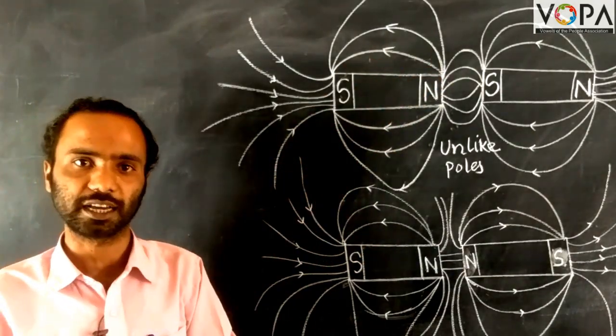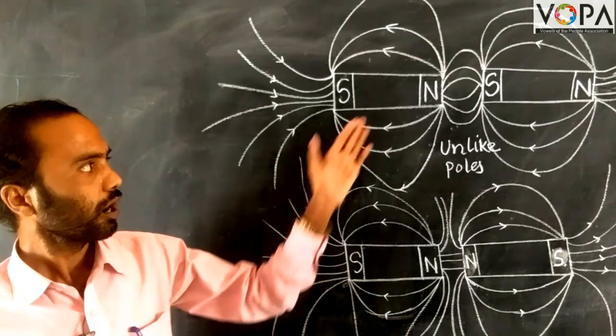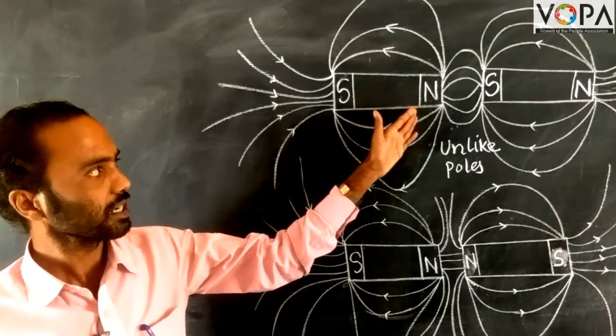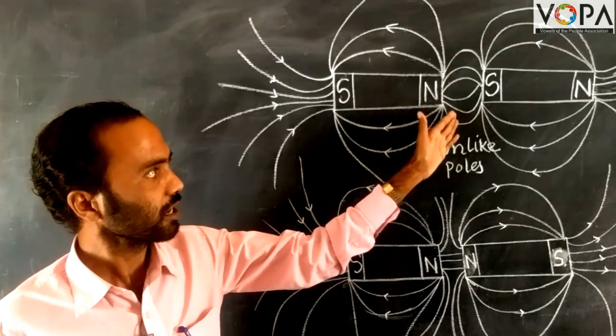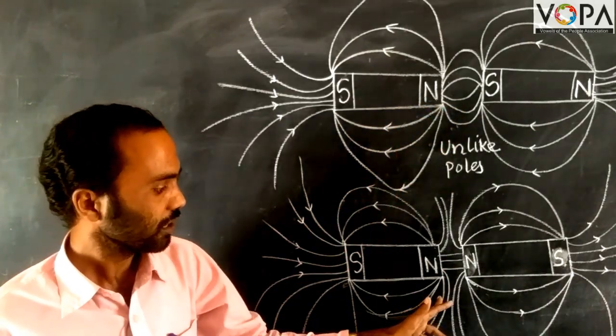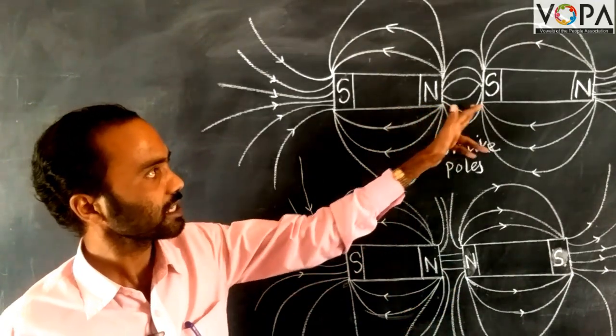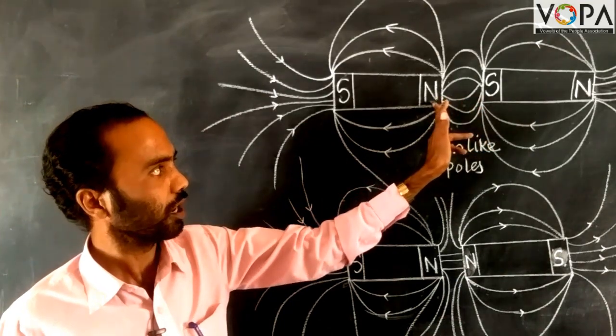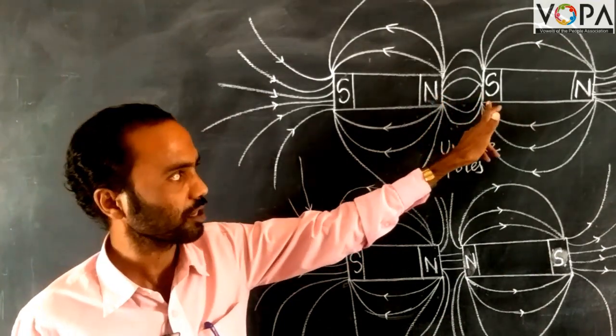Now in these magnetic lines of force, there is repulsion between the like poles and attraction between the unlike poles, that is north and south.